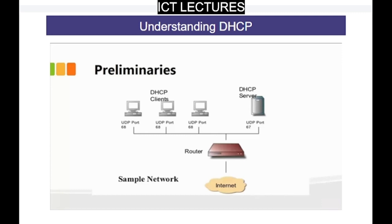The port numbers that the DHCP server uses are 67 and 68, and it uses UDP. In this lesson we briefly covered what a DHCP server is, the main function of the DHCP server, and how clients obtain their IP addresses. I hope this helps — let's move to the next lesson.